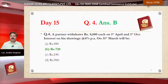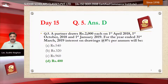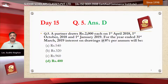Question number four: a partner withdraws rupees 8000 each on 1st April 2018, 1st October 2018, and 1st January 2019 for the year ending 31st March 2019. Interest on drawings at the rate of 8 percent per annum — after calculation, the right answer is option D, rupees 400.